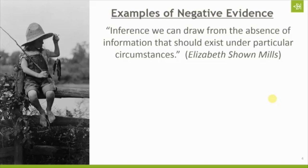Negative evidence is what should be there but isn't. Here's how Elizabeth Shown Mills actually states it in her book Evidence Explained: negative evidence is the inference we can draw from the absence of information that should exist under particular circumstances. If you do not yet have a copy of Evidence Explained, I would strongly encourage you to get one — hard copy or electronic. Mine sits on my desk and I use it constantly. It's a really good refresher about things we might be missing as we do our family history research.